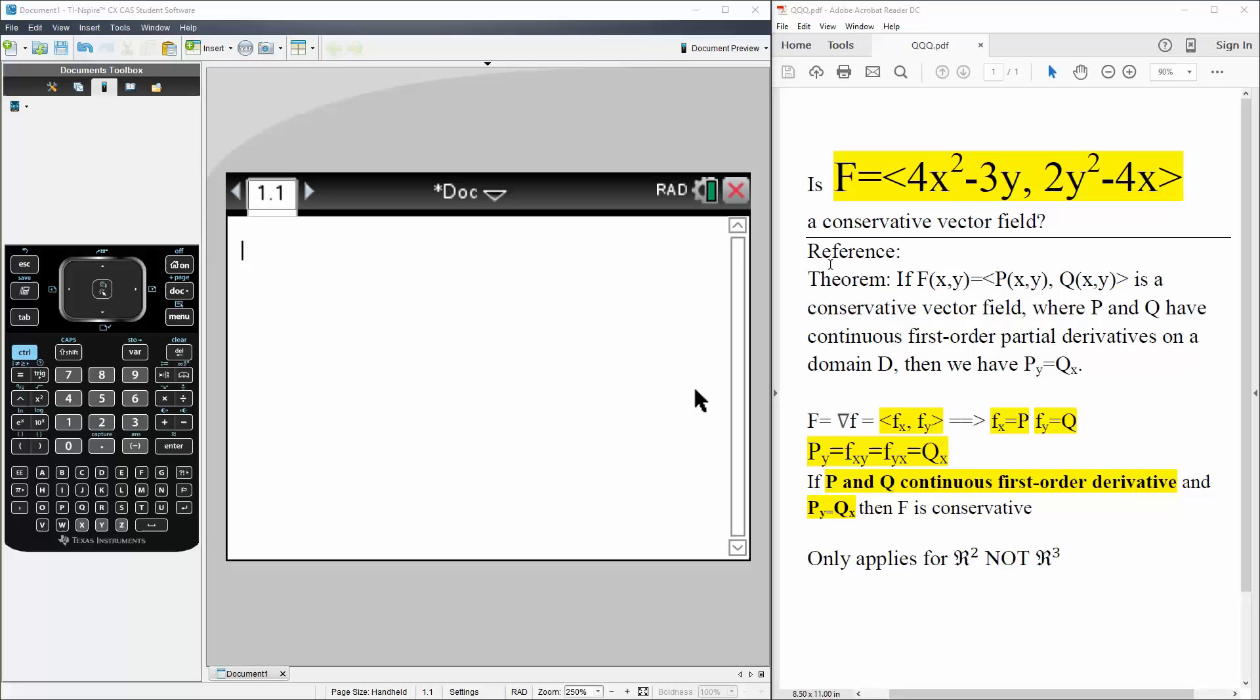And below is the theorem that we use to detect whether it would be a conservative vector field or not. So you can pause the video and read this. So let's get started.